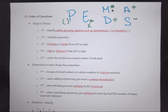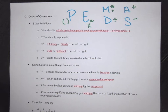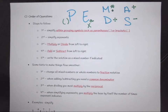Multiply and divide are partners. When looking at your order of operations, you're always going to start on the left-hand side of your expression and as you move through it, you do whatever comes first — whether it's multiply or divide. The same goes for addition and subtraction. You will add or subtract from left to right, whichever comes first.